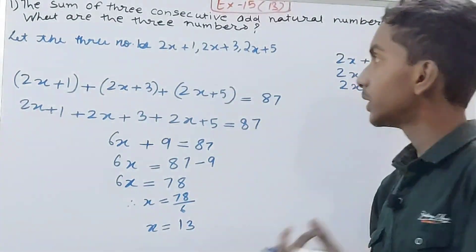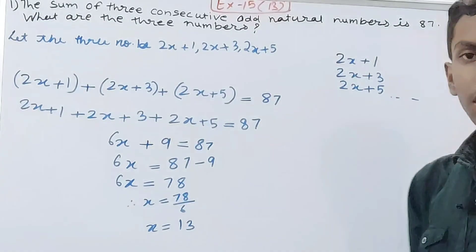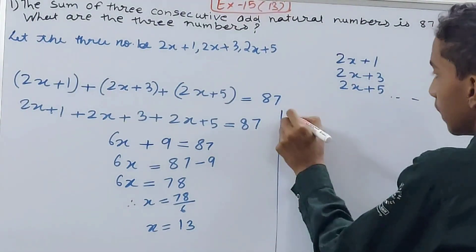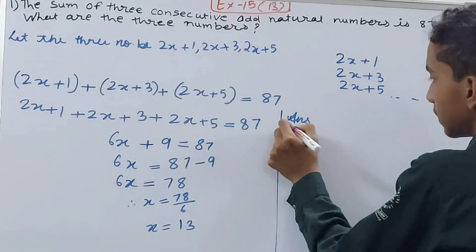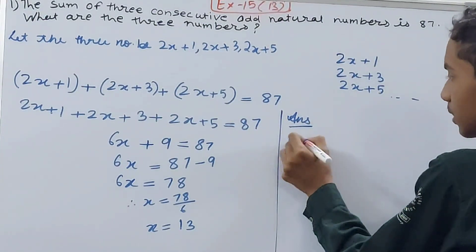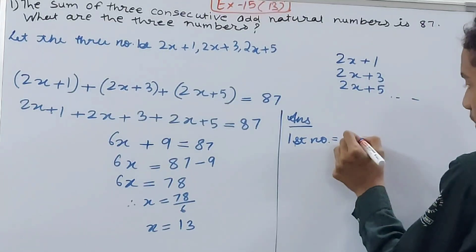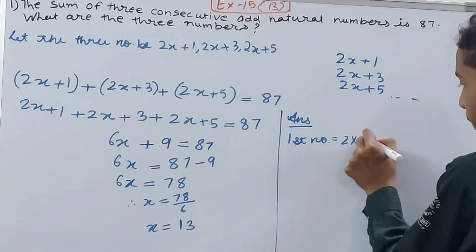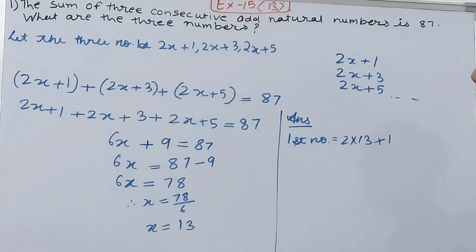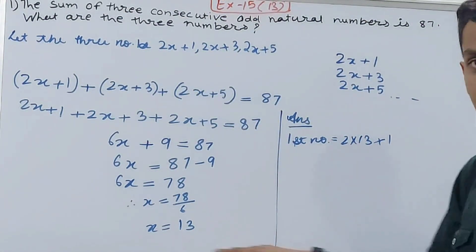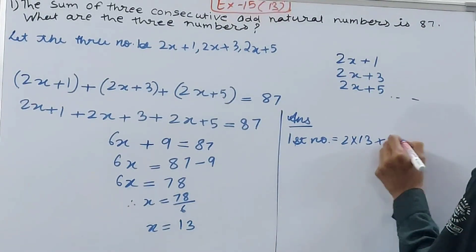But this is not the answer because it has been asked what are the three numbers. So now we will calculate. First number is 2x+1, so 2×13 + 1. This is 26 + 1 = 27.